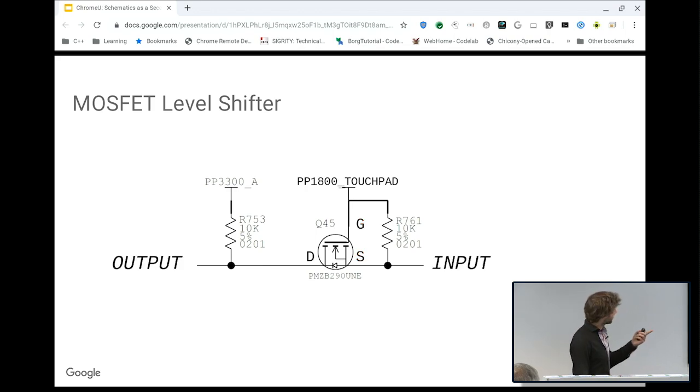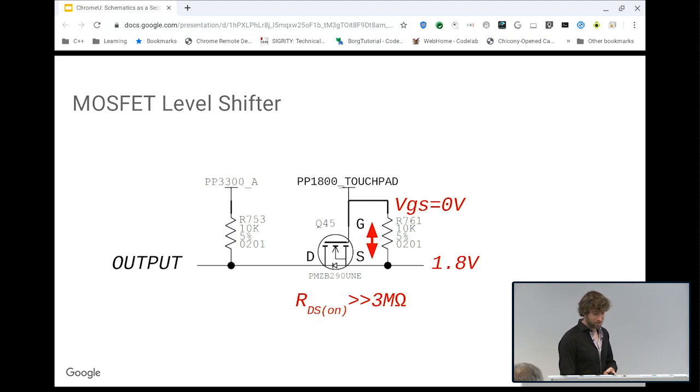Inputs on the left, outputs on the right. Suppose I put 1.8 volts here. I have a gate to source voltage of zero because I have 1.8 volts at the gate. My resistance here is extremely high. We have yet another voltage divider, and most of the energy is going to go to the output. Because my output is 3.3 volts, I have 3.3 volts on the output. If I put zero here on the input, my transistor will turn on. My resistance is very low, I have the voltage divider in the opposite direction, so I get zero on the output.